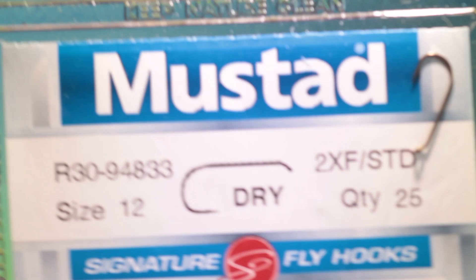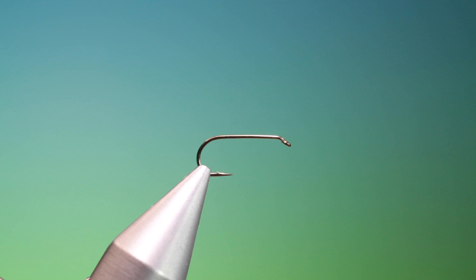We'll start with the Mustard R30 size 12 dry fly hook. This is the quill cull midge emerger.